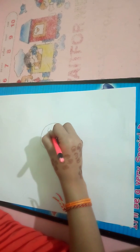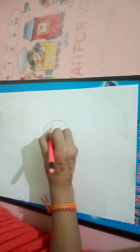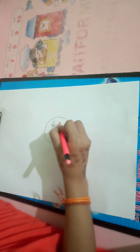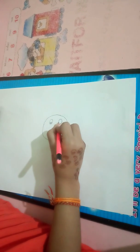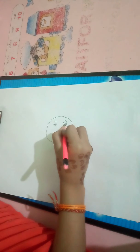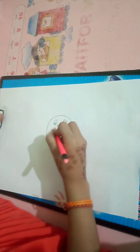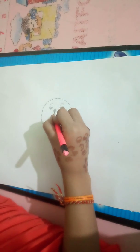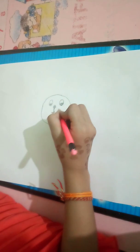Now we will make the cat's eyes. Now the next eye. Now we will make the cat's nose. Now we will join these two parts.